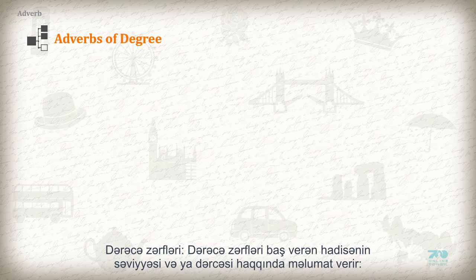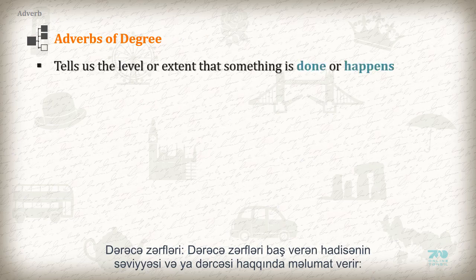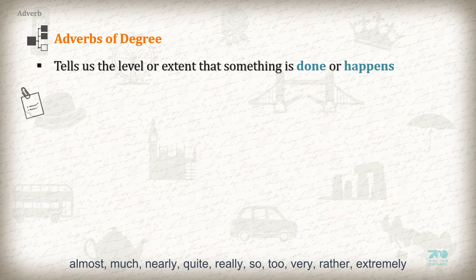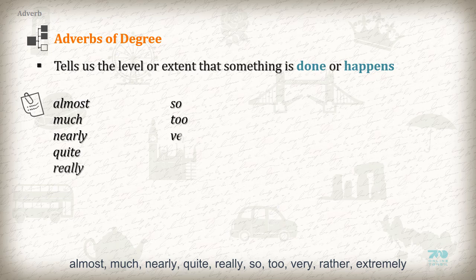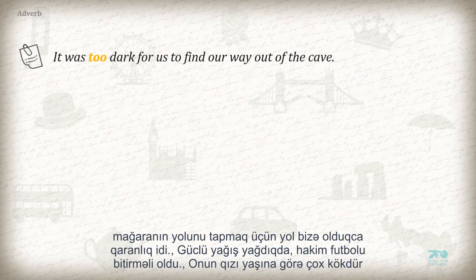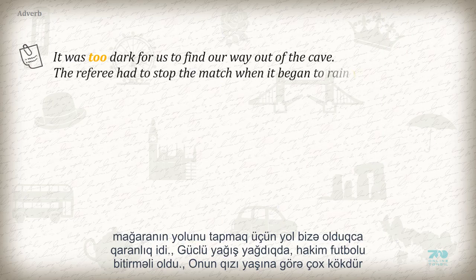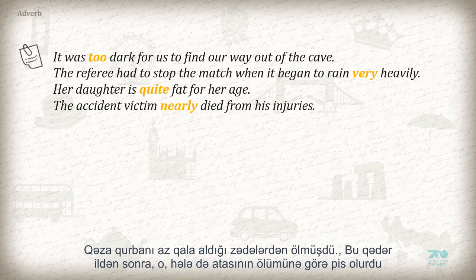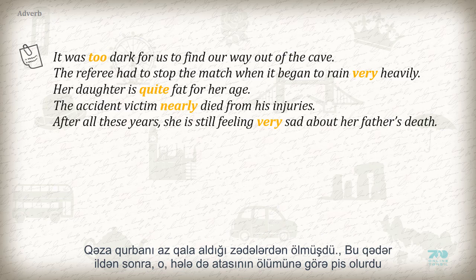An adverb of degree tells us the level or extent to which something is done or happens. Words used as adverbs of degree include: almost, much, nearly, quite, really, so, too, very, rather, extremely, etc. For example: 'It was too dark for us to find our way out of the cave' (before adjective). 'The referee had to stop the match when it began to rain very heavily' (before adverb). 'Her daughter is quite fat for her age.' 'The accident victim nearly died from his injuries.' 'After all these years, she is still feeling very sad about her father's death.'